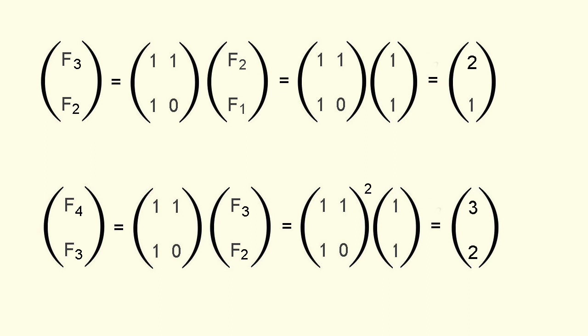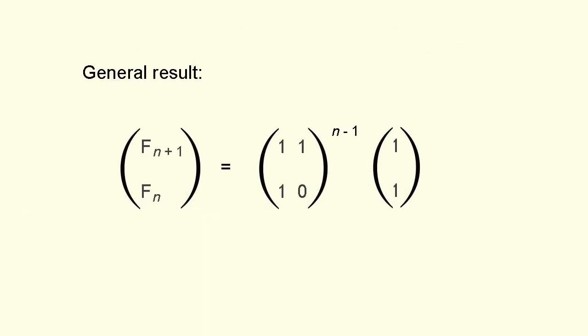Let's do one more iteration to get F4 F3 like this. Now because F3 F2 is this and F2 F1 is this we can also write F4 F3 in this way. You might see where this is leading. At each iteration we bump up the power of the matrix by 1 and continue to operate on the original vector. So the general result for F sub n plus 1 F sub n is just this.